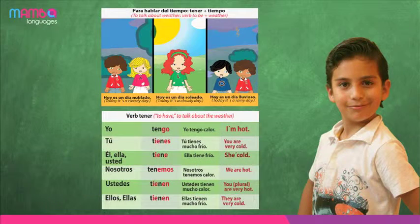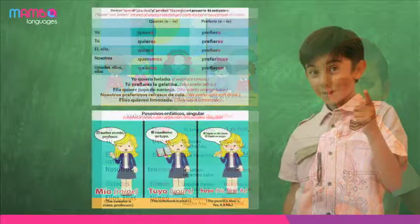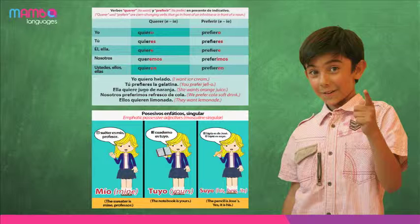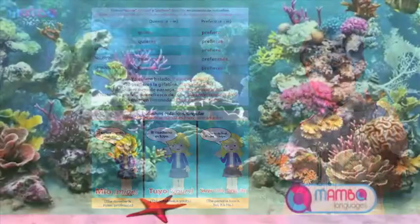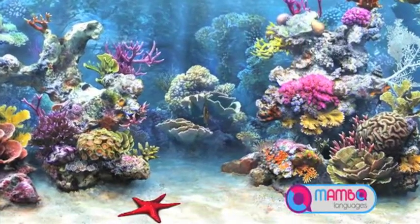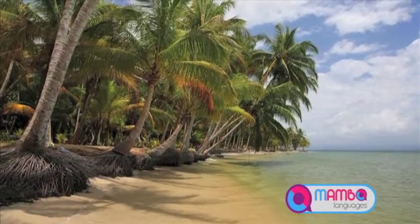To talk about these subjects, students will review regular AR and ER verbs, the verbs tener, hacer, estar, querer, preferir, the verb gustar, as well as adverbs and possessive adjectives. Their knowledge and understanding of Hispano-American culture will increase through this level.